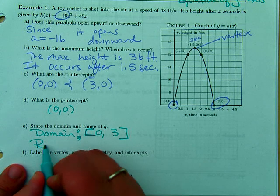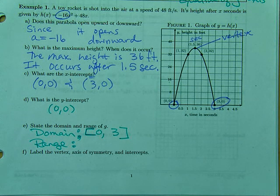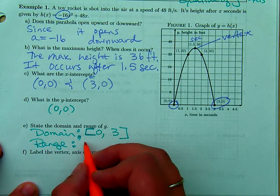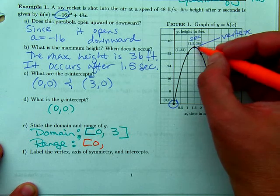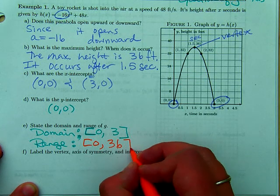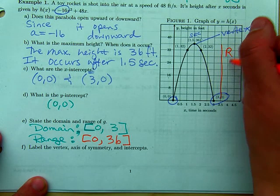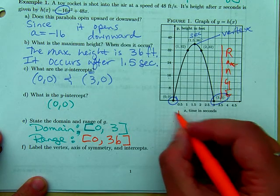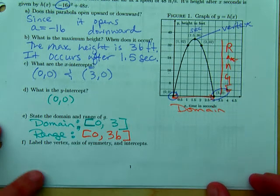What about the range? It starts out at zero above the ground. So it starts also at zero. That's its smallest. It's going up to a maximum height of 36. So the range is from zero to 36. The range goes vertically. Domain goes horizontally.